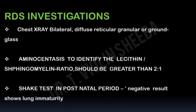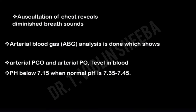Now we can see the investigations. Chest X-ray reveals a ground-glass appearance, which indicates RDS. Amniocentesis is done to identify the lecithin-to-sphingomyelin (L/S) ratio — it should be above 2:1, which indicates lung maturity. The shake test is performed in the postnatal period: gastric content is aspirated and the test is performed; a negative result indicates lung immaturity. Auscultation of the chest is done to identify air entry — diminished breath sounds indicate some degree of lung collapse. Arterial blood gas analysis shows arterial PCO2 above 65 mmHg (normal upper limit is 45 mmHg) and arterial PO2 of 40 mmHg, even though the normal lower limit is 50 mmHg.